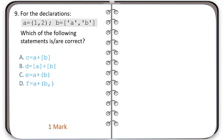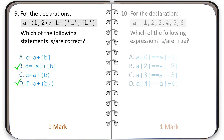Question number nine: see the given declarations. Options A and C are invalid because they are trying to concatenate a list to a tuple. Question number ten: see the given declaration of variable A, which is a tuple.